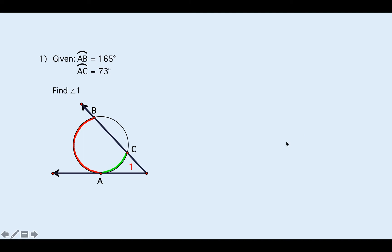For each of these problems, pause the video, see if you can do the problem, then come back and check your answer. I'm going to go through these pretty quick. Alright, angle one is equal to one half of the big arc AB minus the measure of the little arc AC.